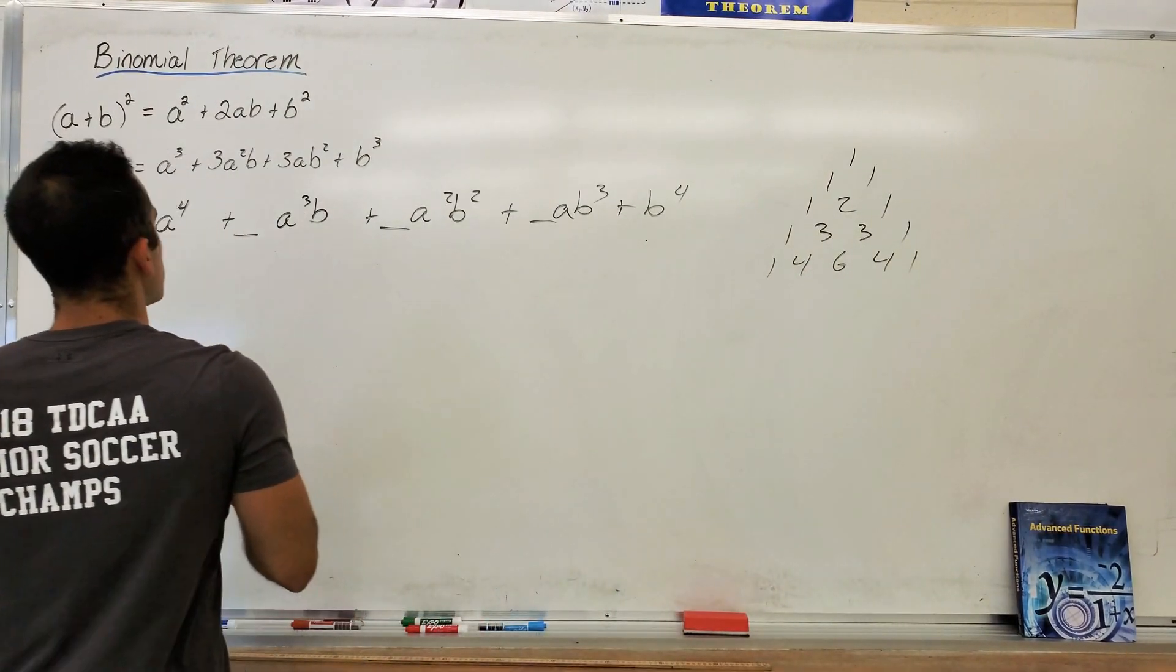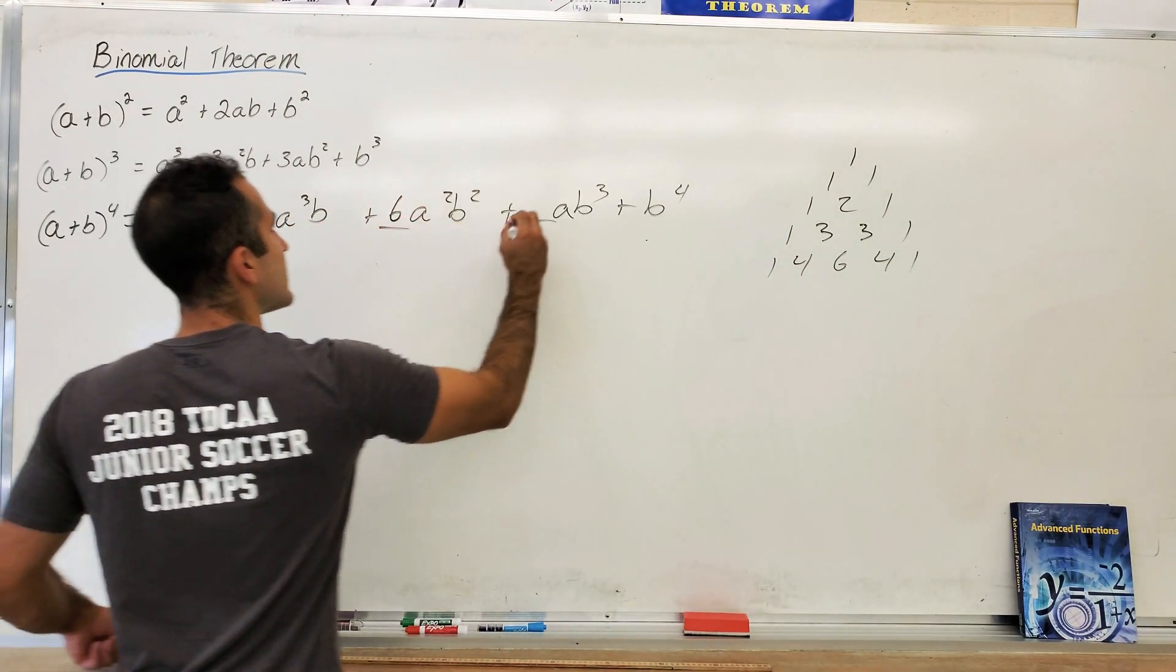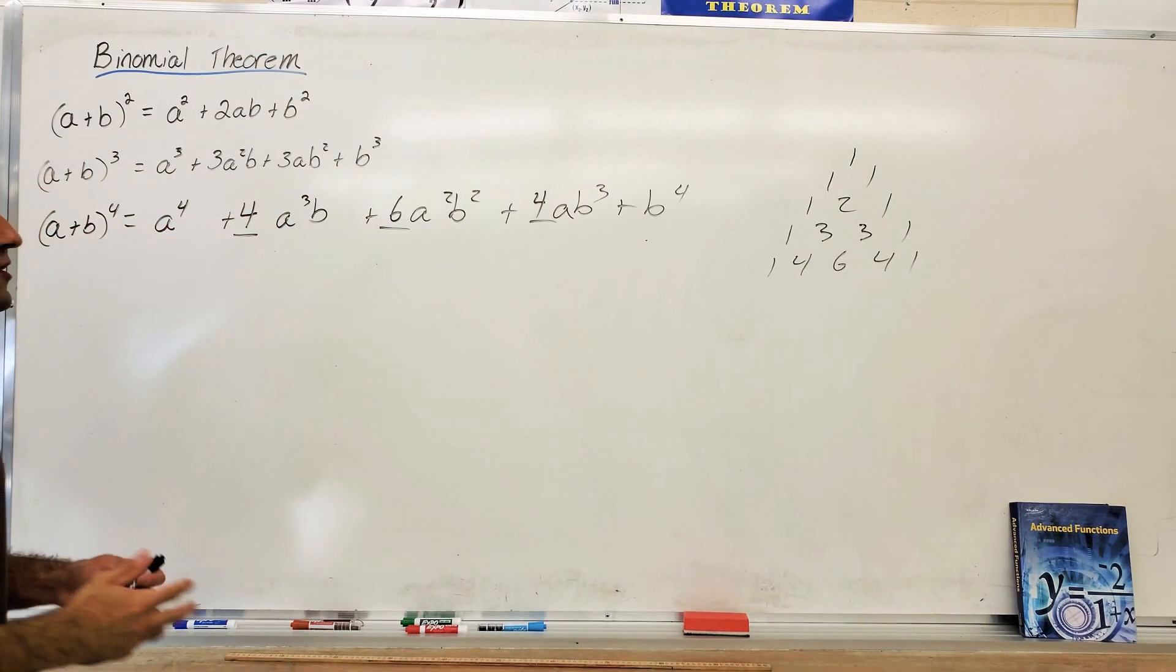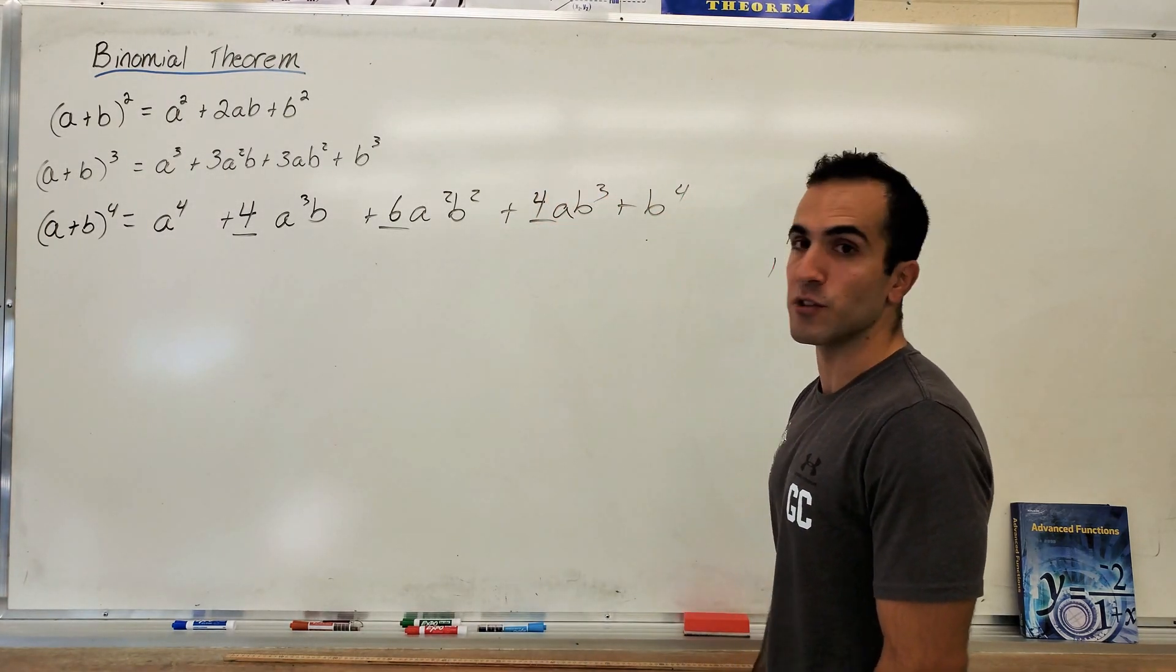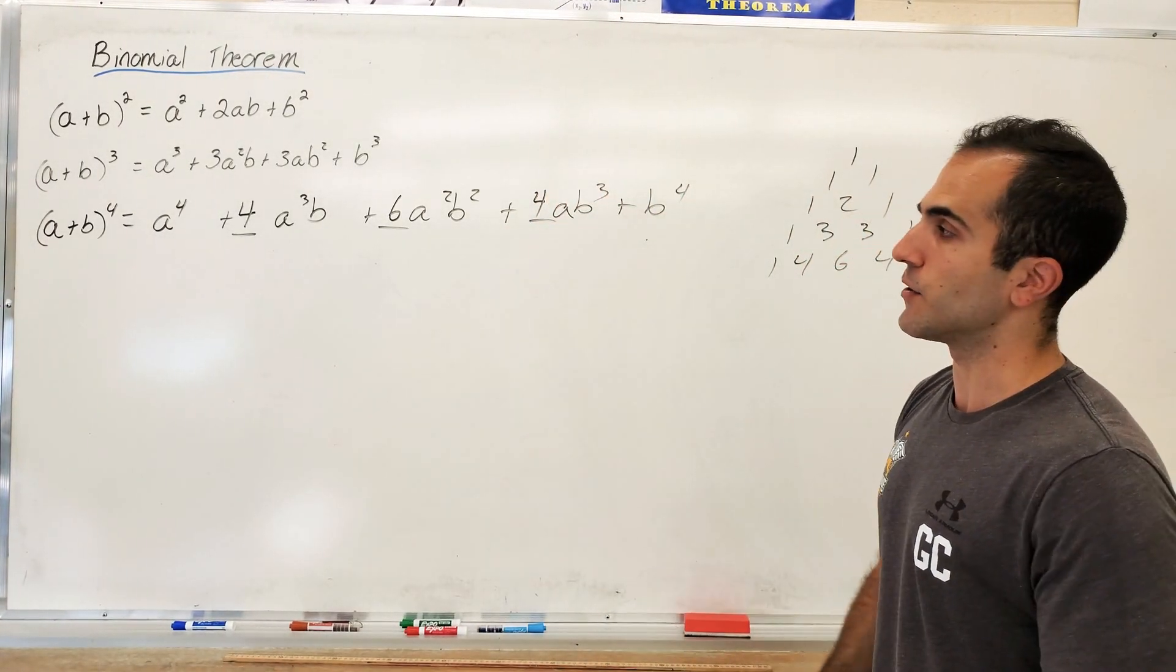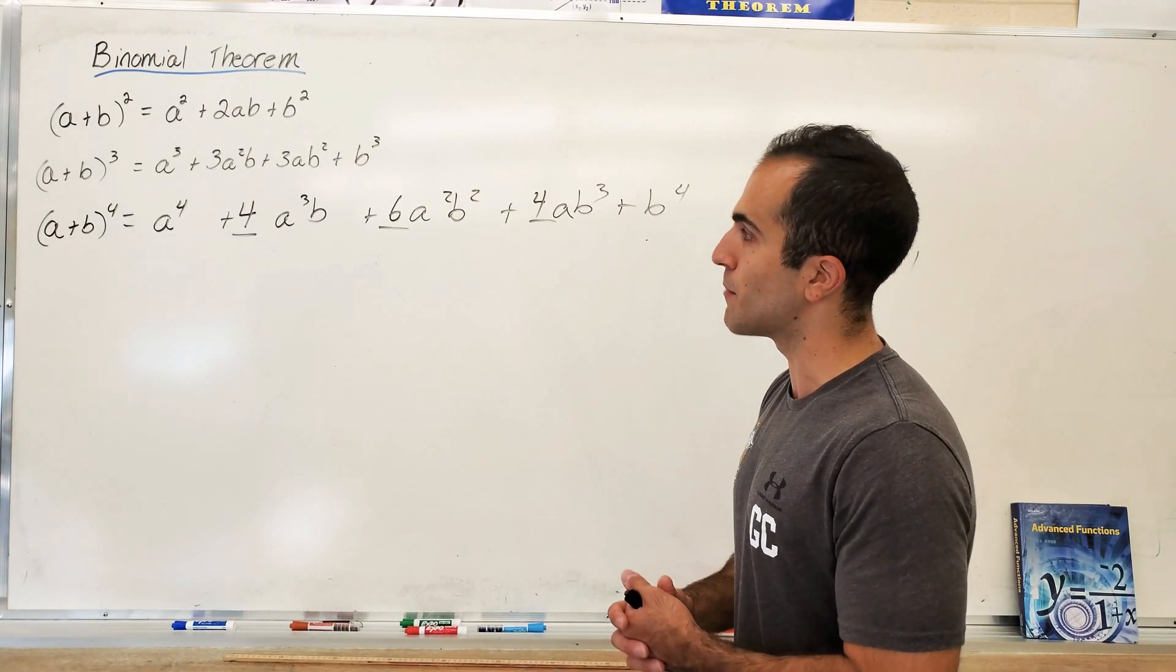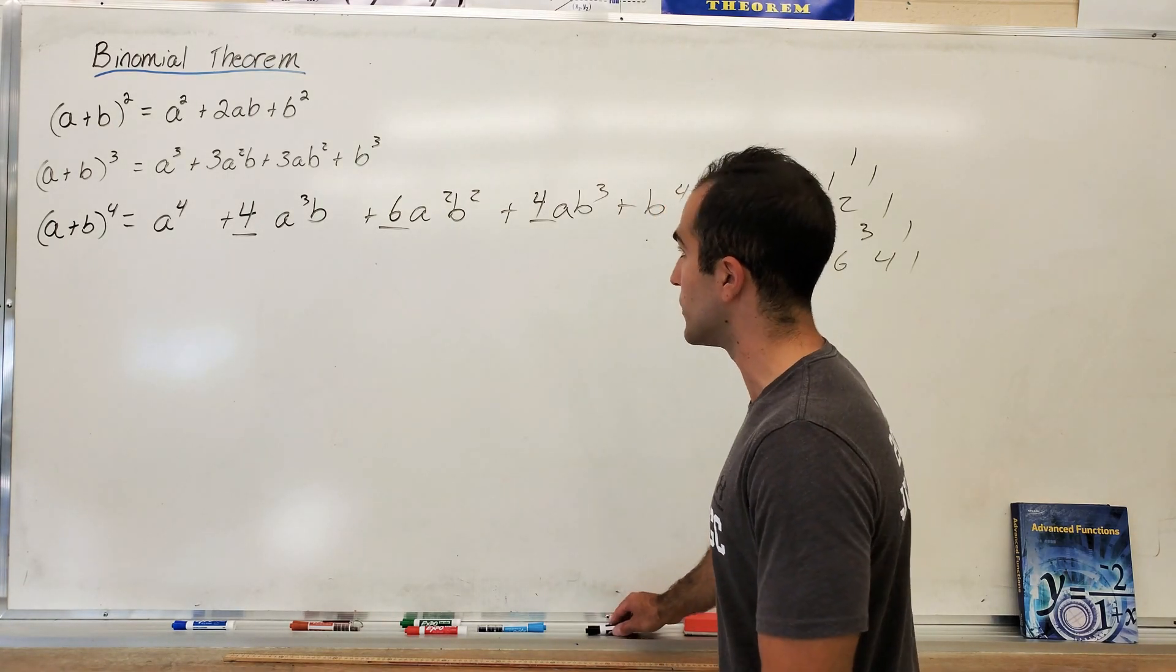So we have the exponent 4 here, so our coefficients are 1, 4, 6, 4, 1. I don't write the 1s. Okay, so just understanding this pattern, we can expand any binomial, which is going to be crucial when you're doing difference quotient in chapter two and in calculus. This is something grade 10s can understand. Grade 11s, grade 12s, you should have this mastered by now. But if you don't, please watch this over and let's put an example up now.